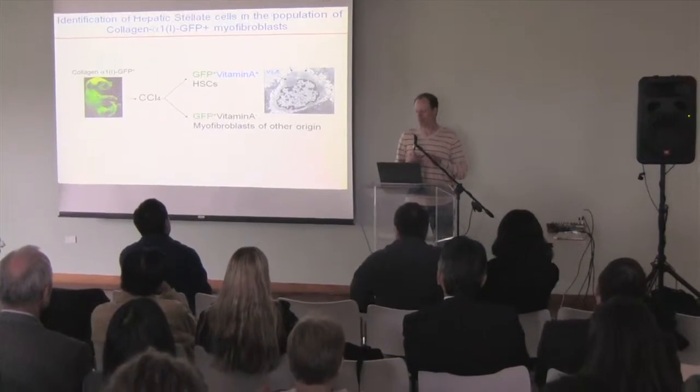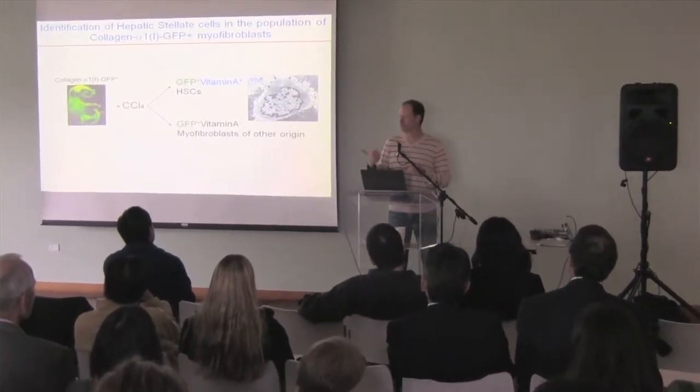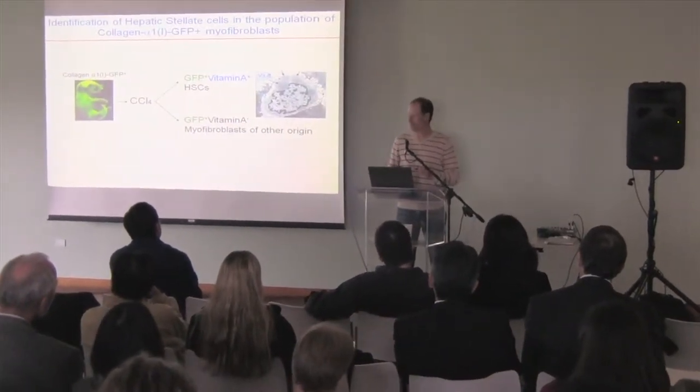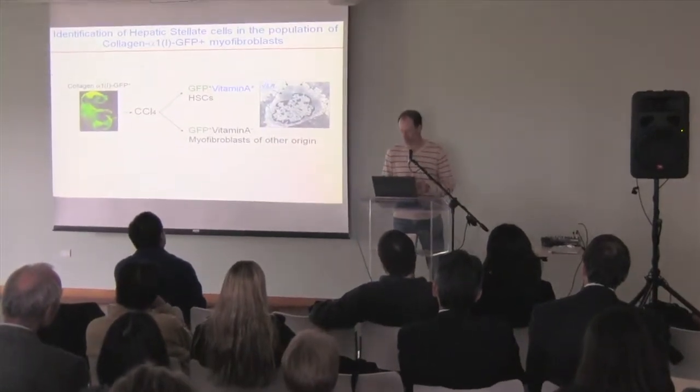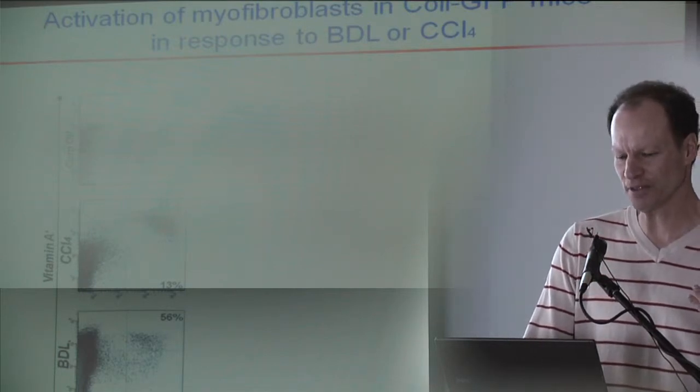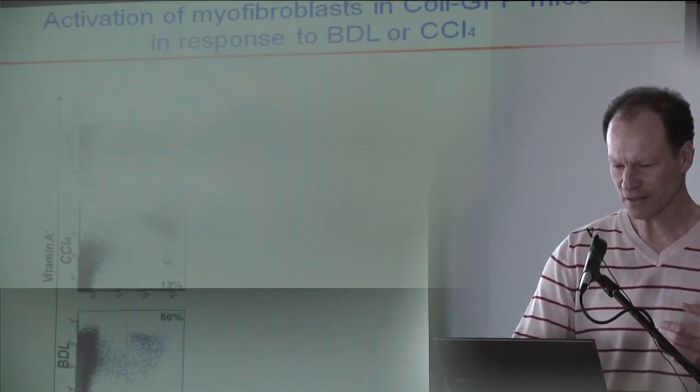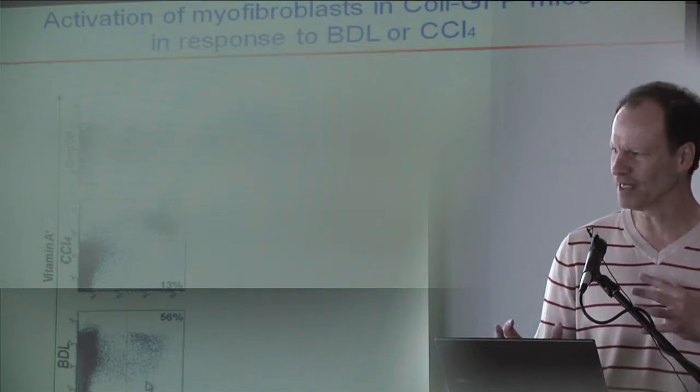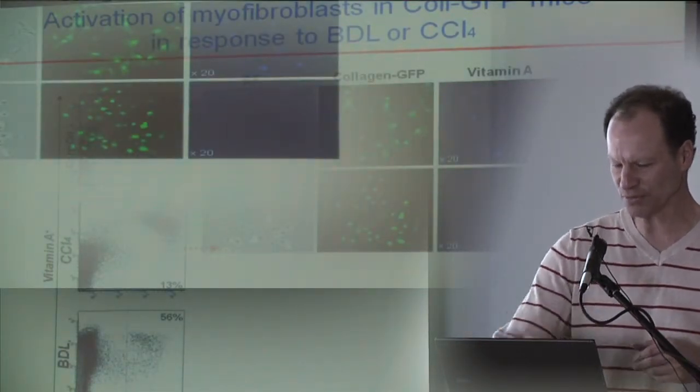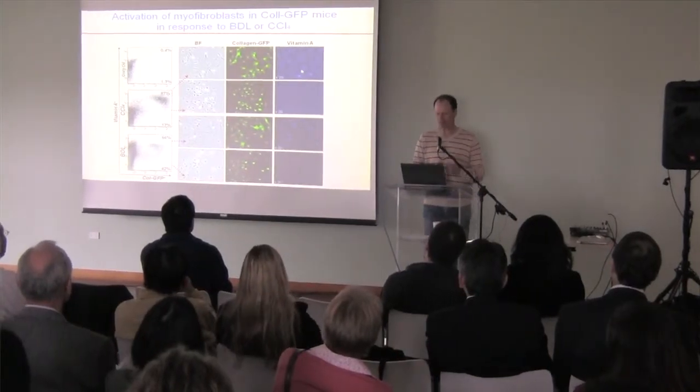The way this experiment works is that we induce fibrosis by one of two ways, carbon tetrachloride or bile duct ligation. We had these enormous number of green cells because we have all these myofibroblasts. We sorted them two ways. We sorted for GFP, all the myofibroblasts, and we sorted for vitamin A. Do you have vitamin A? Are you a stellate cell or not a stellate cell?